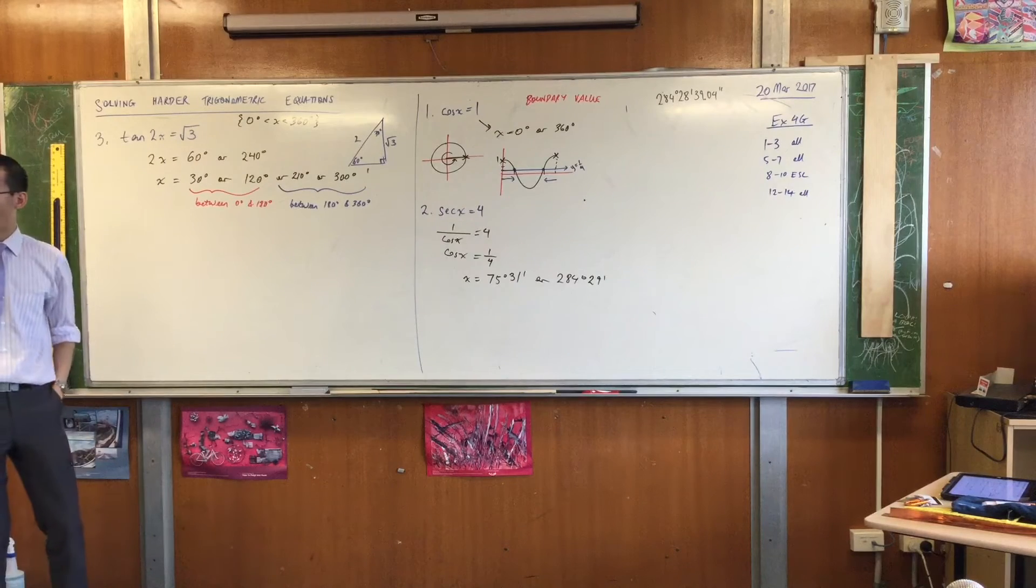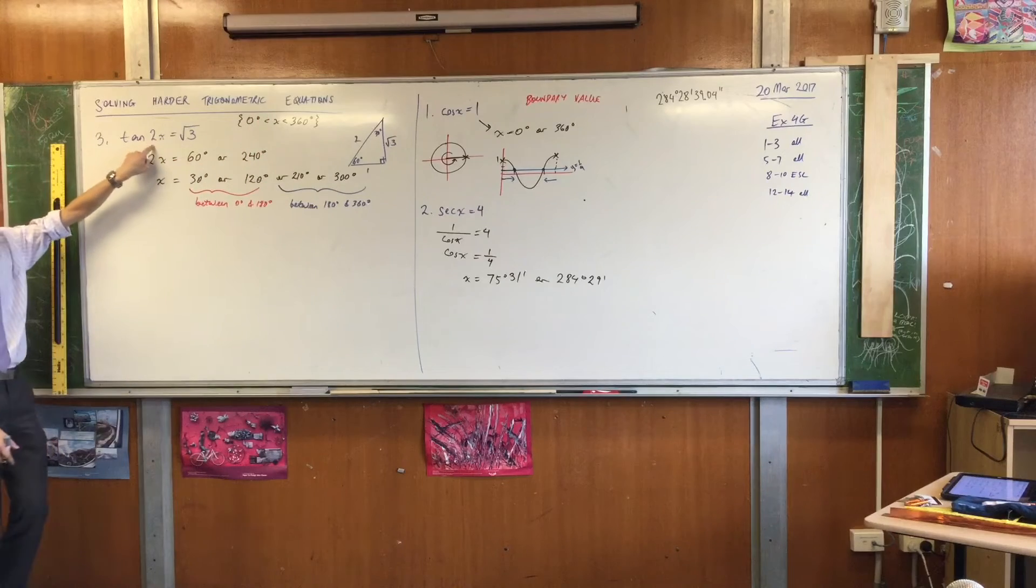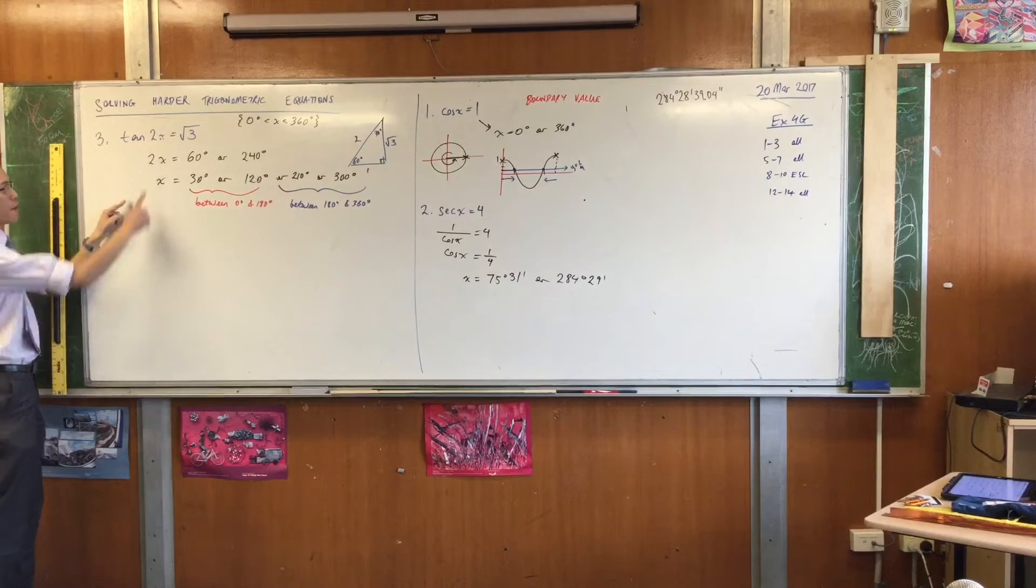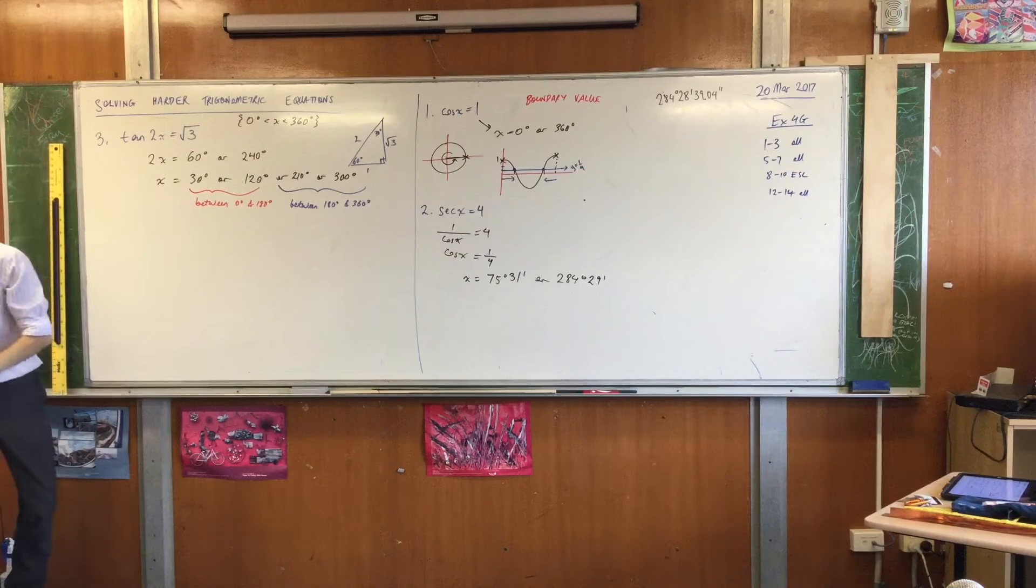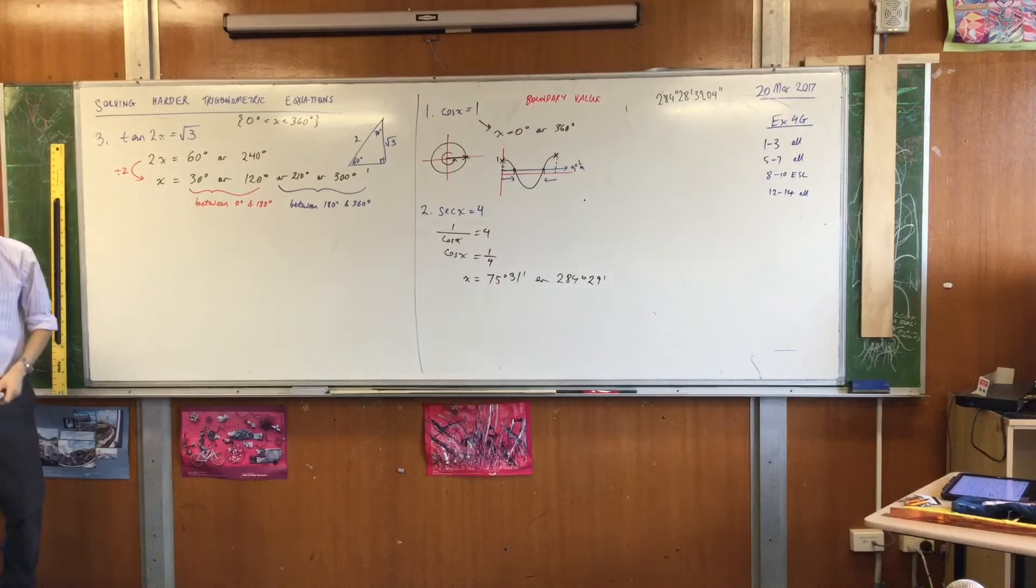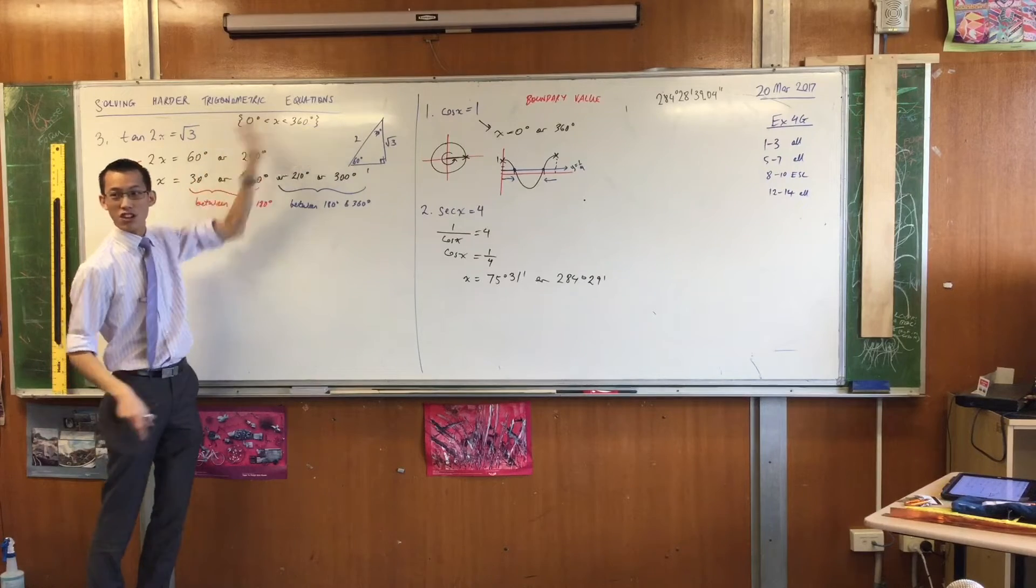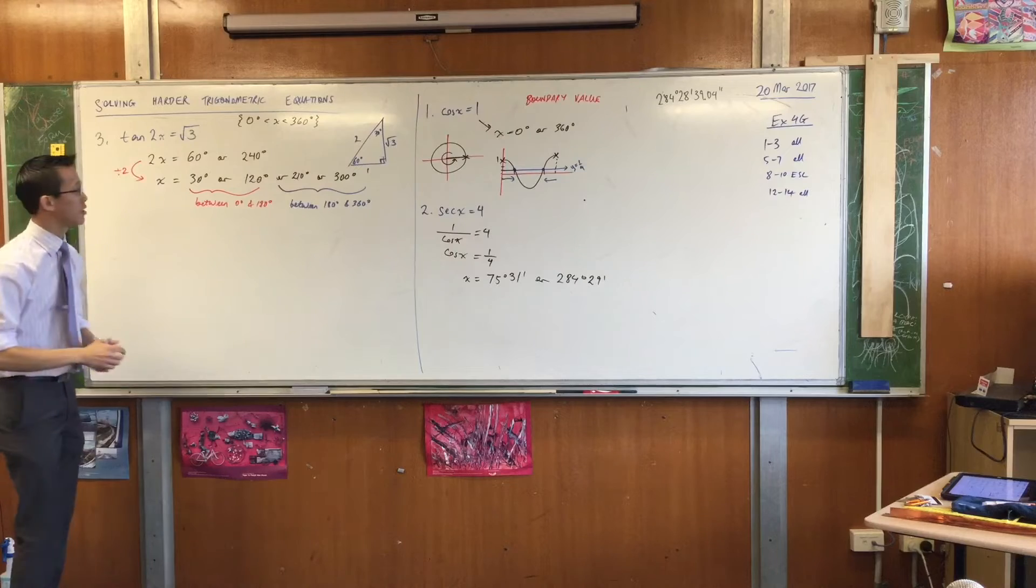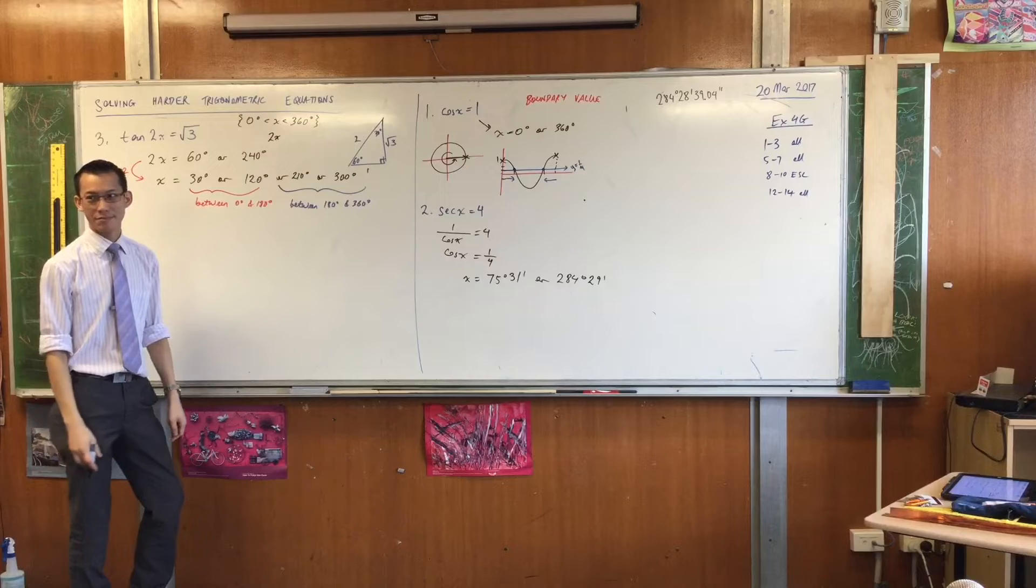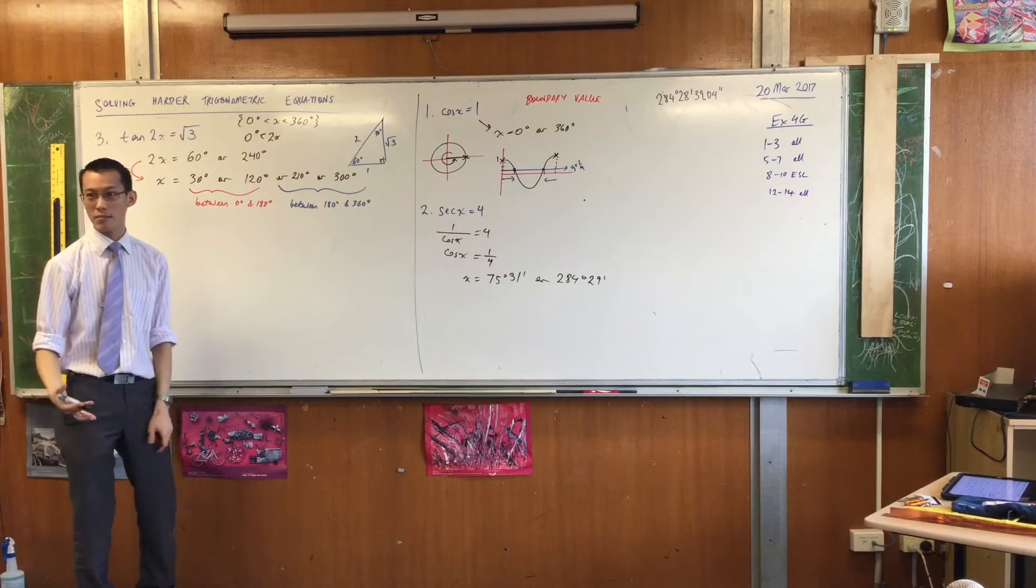If I'm solving for x between 0 and 360, then for 2x, I'm actually solving in a broader domain. Here's how you can see that. Remember from this line to this line, what I did was I divided by 2, like so, right? Well, if you're solving, therefore, in 2x, then you can take everything here in the domain and multiply by 2, and just sort of reverse it, right? So if I've got 2x in the middle, when you double 0, what do you get? Still 0, so that's fine. But when you double 360, you get 720.